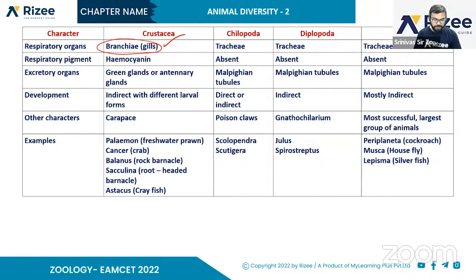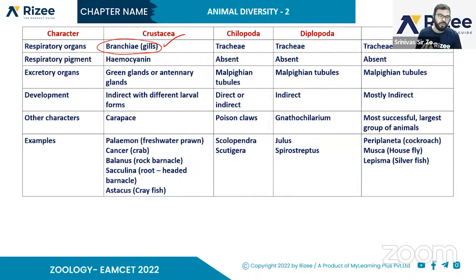Respiratory pigment: in Crustacea, the respiratory pigment is hemocyanin, which contains copper. Hemocyanin is observed in Crustacea. In Chilopoda, hemocyanin is also present. In the remaining three classes — Diplopoda and insects — respiratory pigment is absent.